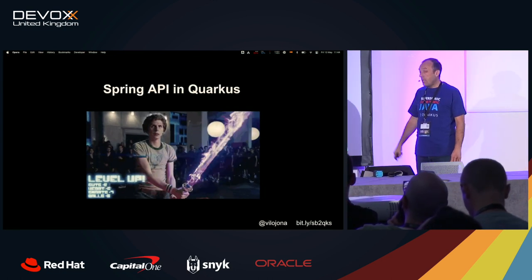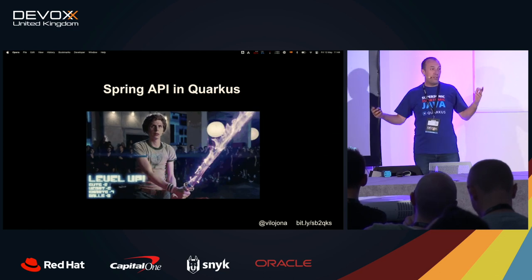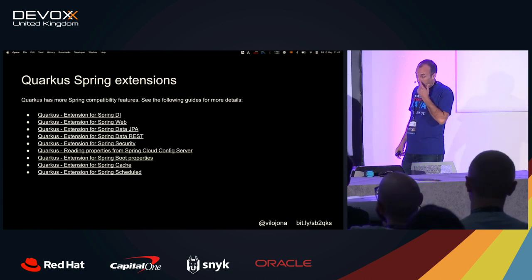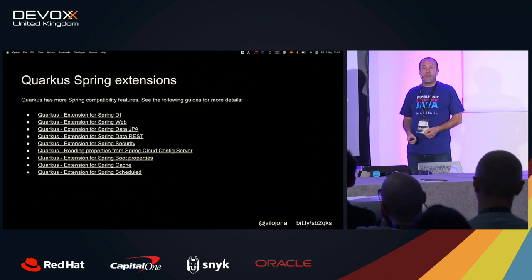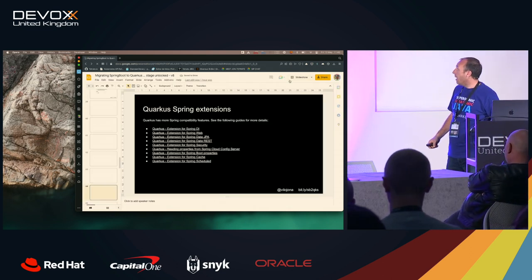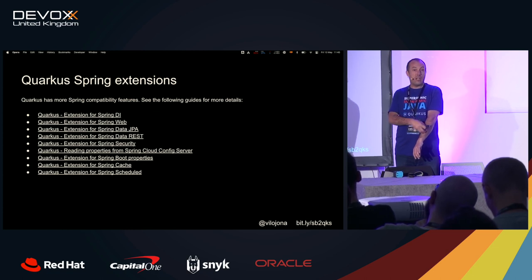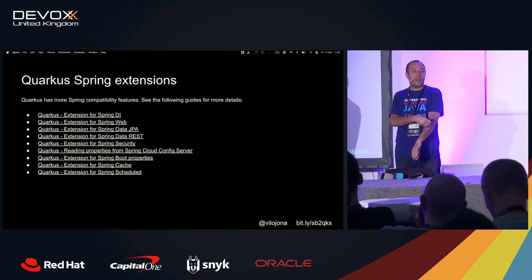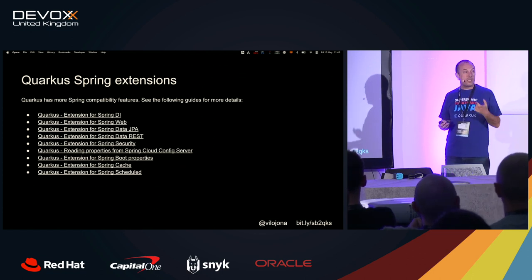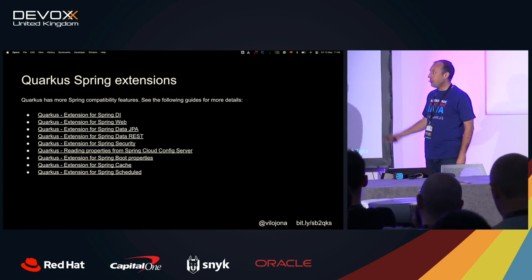So we reach a point where I say: forget everything I told you — that's not the way. The way is to use the Spring extensions. Quarkus has several Spring extensions that will make your life even easier. Because you don't need to touch your code — just simply add the extension and your application will still think it's doing Spring, but it's not. Because those extensions use the same interfaces as Spring, and Quarkus will create the correct code underneath using those interfaces.